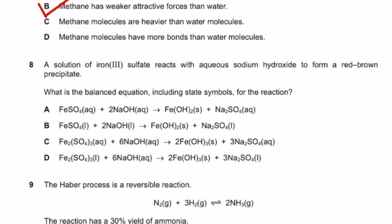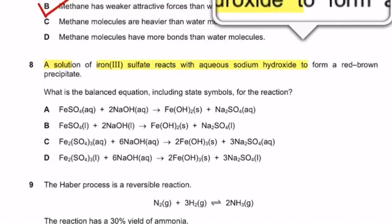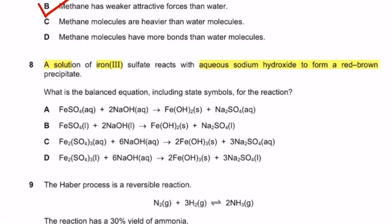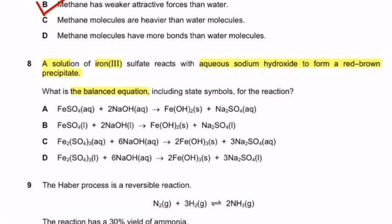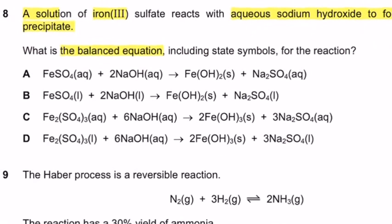Question number 8: A solution of iron sulfate reacts with aqueous sodium hydroxide to form a red-brown precipitate. What is the balanced equation including state symbols for the reaction? First of all you should notice that here is a solution. It means you have to choose the one which is having aqueous in the formula. Iron sulfate aqueous. It means that we will neglect the option B and D.